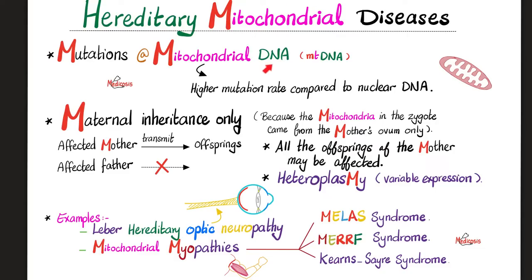Where did I get my mitochondrial DNA from? Only from the mother, not from the father, because the father left his tail outside. So the affected mother, who has a hereditary mitochondrial disease, can pass down this disease to all her offspring, males and females. But if daddy is affected, daddy cannot give a mitochondrial disease to his children — c'est impossible. All of the offspring of the affected father are not affected at all.